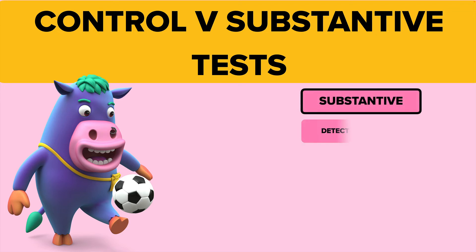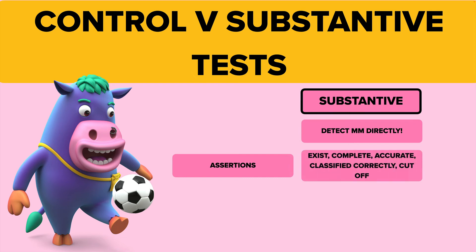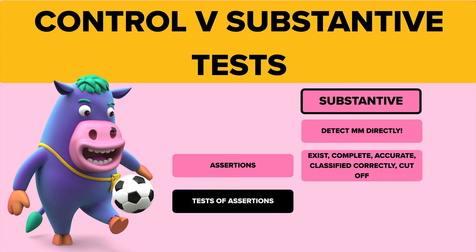Substantive tests detect the material misstatements directly at the assertion level. You go through every item — whether it be a transaction, a balance, or a disclosure — and you ask: do they exist, are they complete, are they accurate, are they classified correctly, is the cutoff correct? You might see this referred to as A-E-I-O-U, which is a nice way of remembering the assertions.